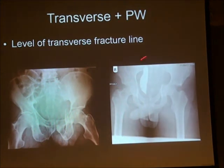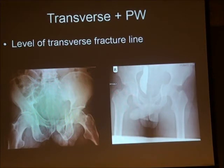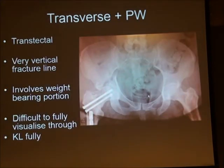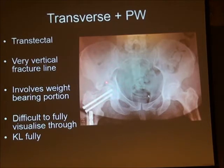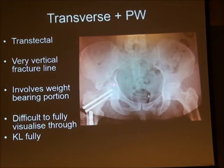Infratectal and juxtatectal transverse fractures with a posterior wall can be approached through a posterior approach. The transtectal fracture however has a much more vertical fracture line, involves the weight-bearing dome, and you probably cannot directly visualise all of the reduction through the Kocher-Langenbeck approach.